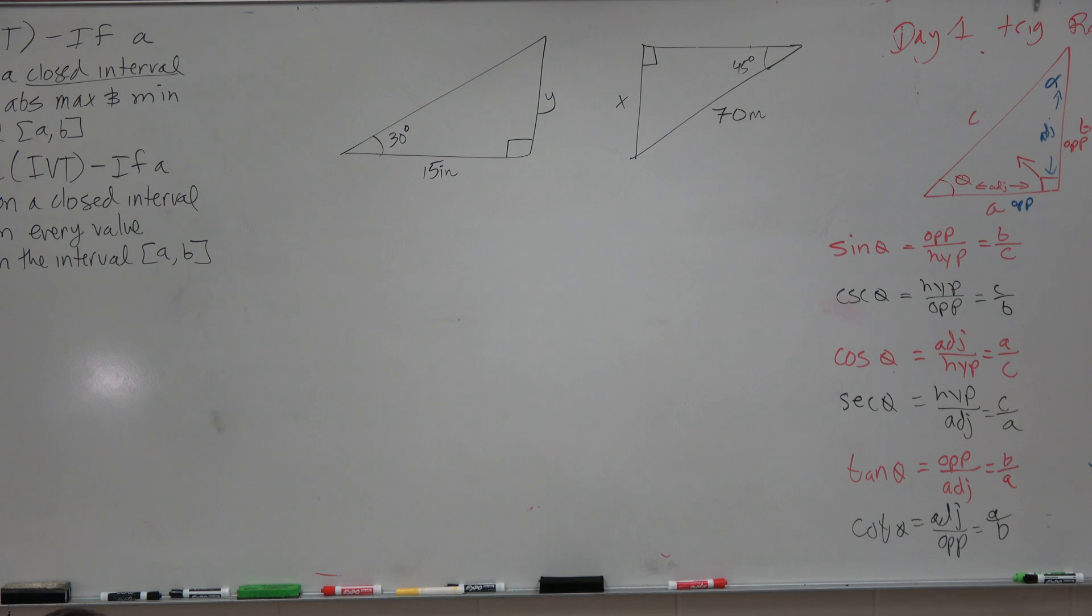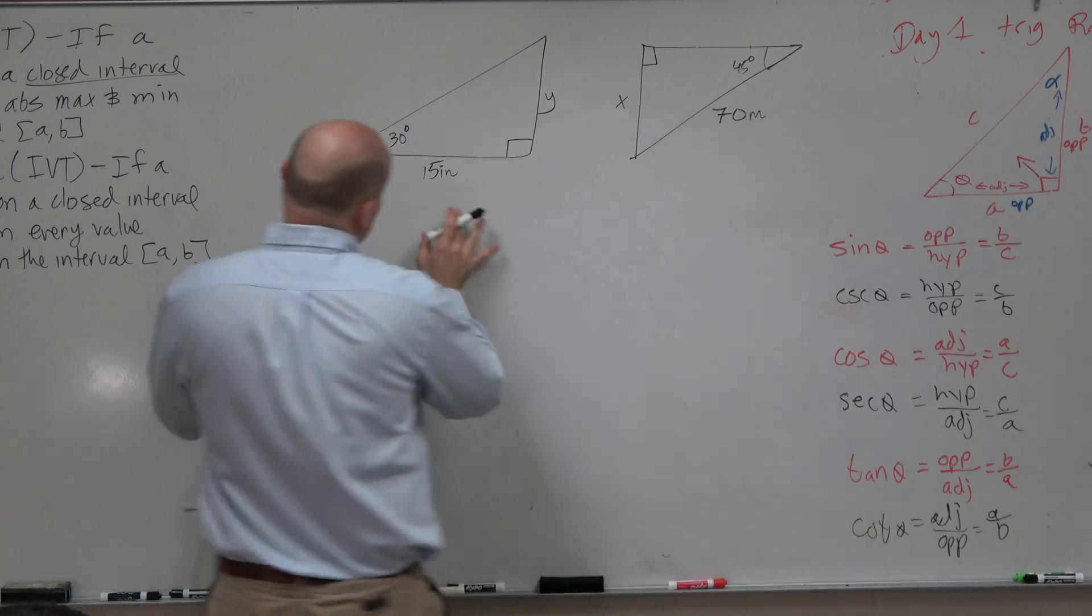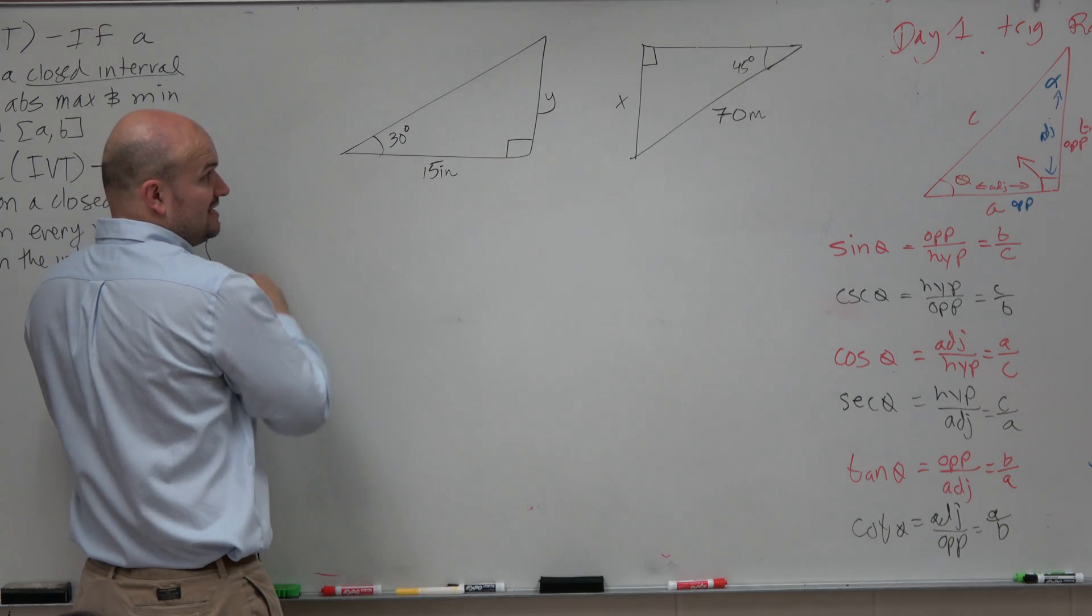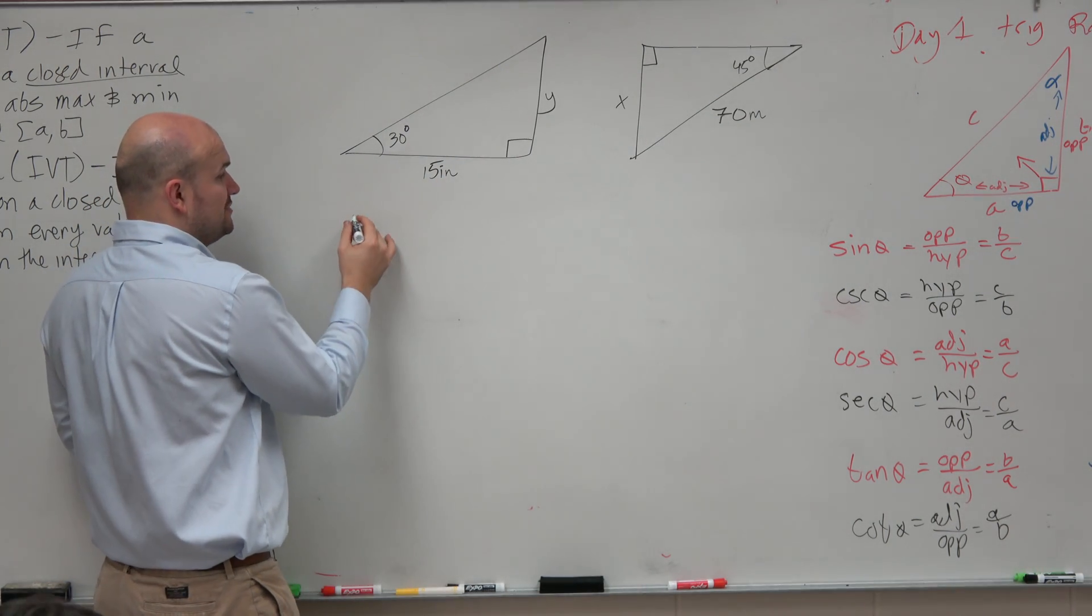All right, so a couple different ways we can do this, guys. First of all, we look at this triangle. We see that we have the adjacent side and the opposite side, so therefore we know we have to use tangent.